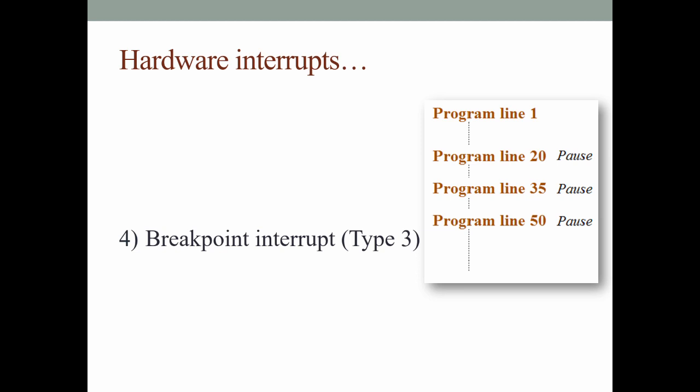The fourth type of hardware interrupt is the breakpoint interrupt, which is also known as type 3 interrupt. Like single step interrupt, this interrupt also takes a pause but after few program lines. As shown in the example, let's say some 20 lines of the program have been executed, then a breakpoint is placed.